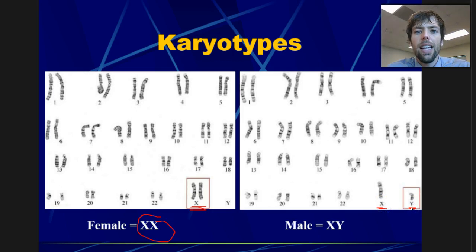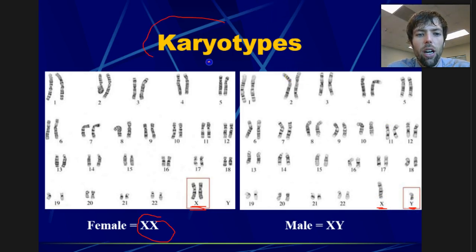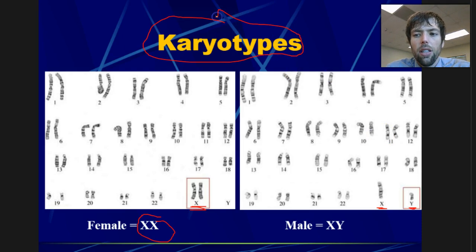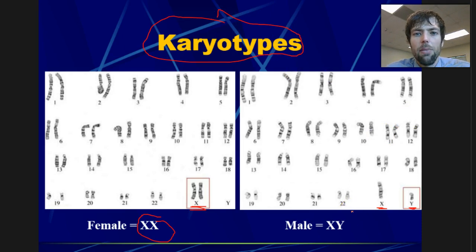I've never told you that there's a name for this picture, and the name for these pictures are karyotypes. So let's talk about how we make these karyotypes, or these pictures of our chromosomes.